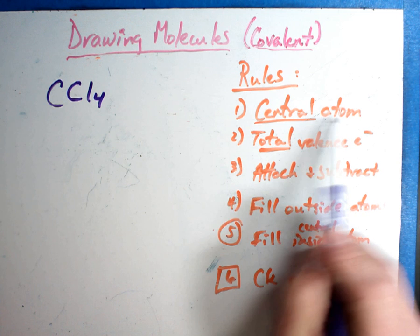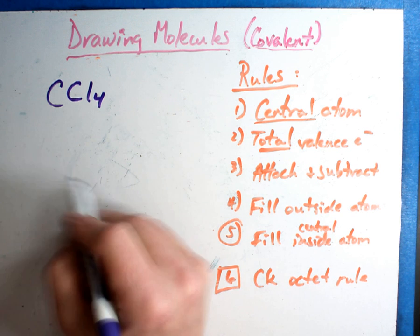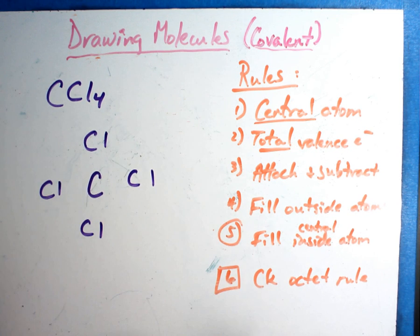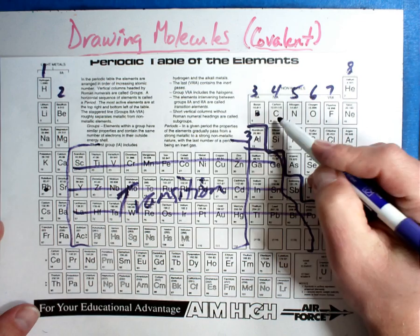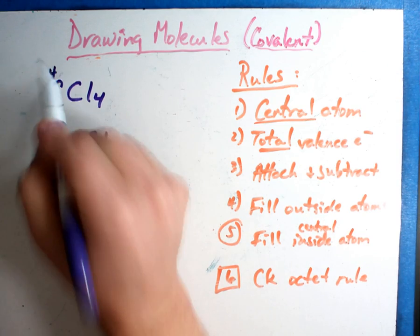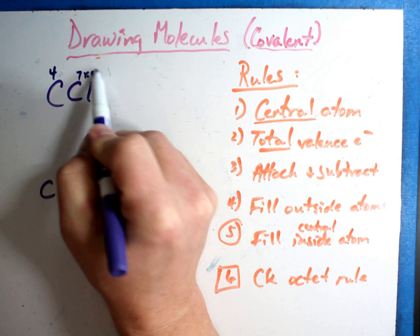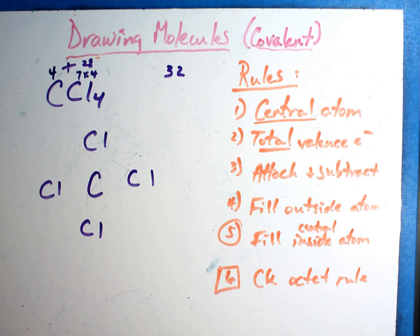These rules aren't going to make sense until we use them, so let's go ahead and do that. Rule number one: find the central atom. The central atom is the one with the lowest subscript number in the formula. Carbon is a one - it's not written, but it's a one. Chlorine is a four. So the central atom goes in the middle - that's going to be the one with the lowest number. You have carbon in the center and four chlorines around it, drawn like a wheel.